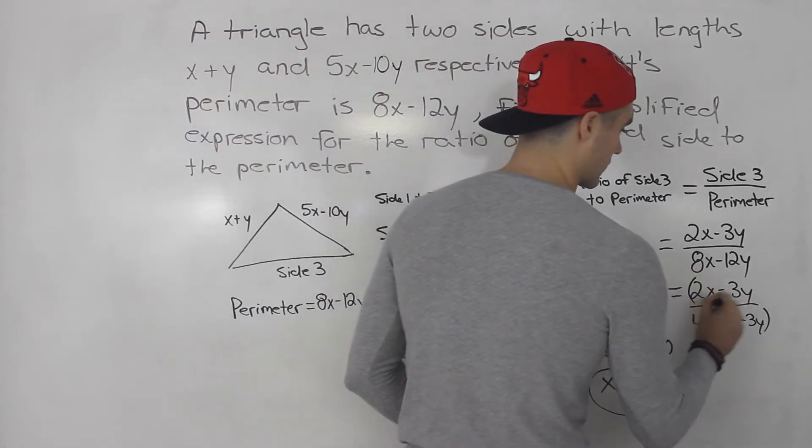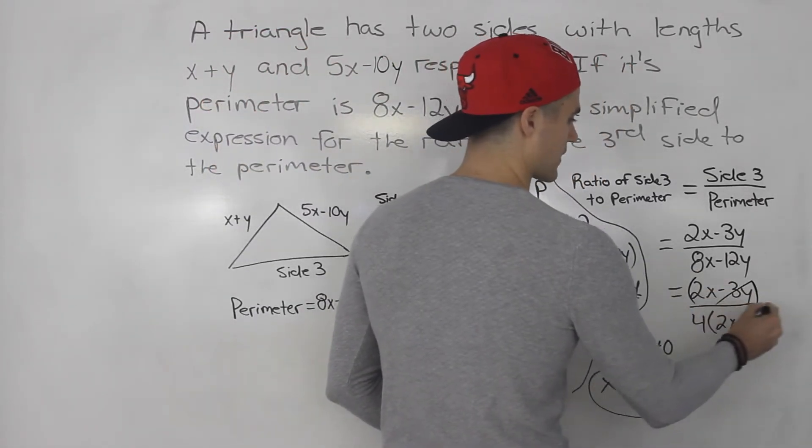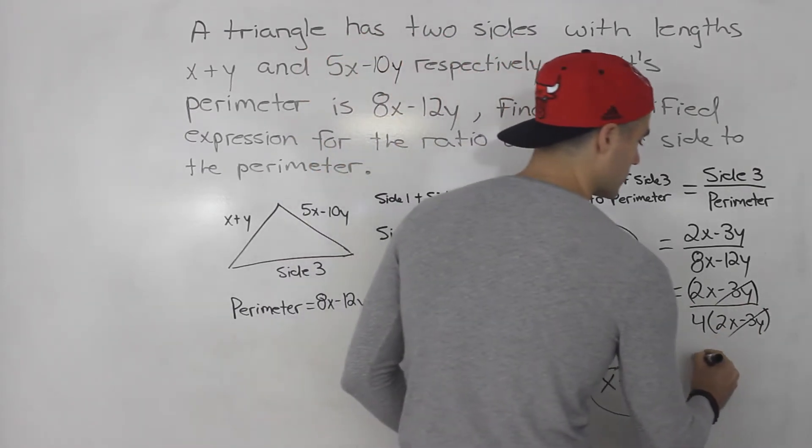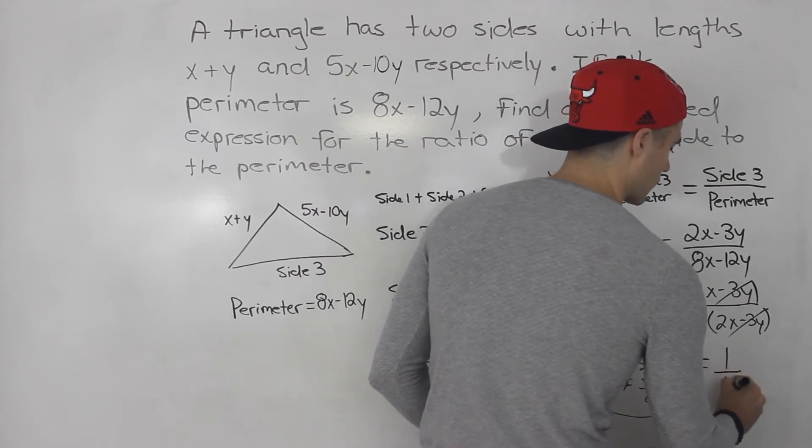And now, going back to simplifying, notice how 2x minus 3y is common in both the numerator and the denominator. We could cancel that out. So we're just left with 1 over 4.